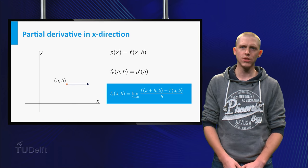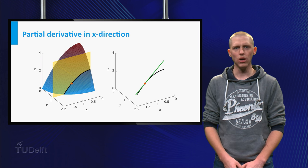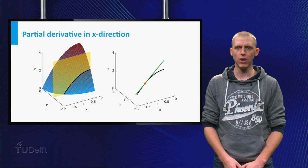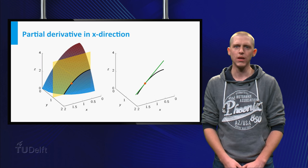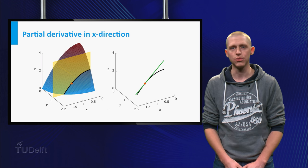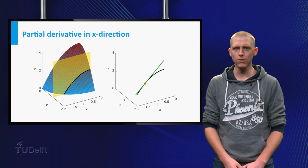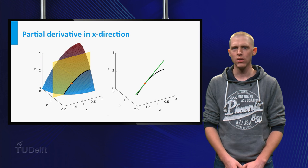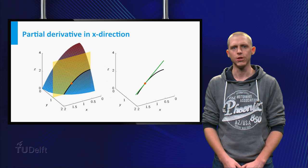What is the geometric interpretation of f_x(a,b)? Well, if c1 denotes the black curve, which is the intersection of the graph of the function and the yellow plane with equation y = b, then f_x(a,b) equals the slope of the tangent line to c1 at the point (a, b, f(a,b)) in three-dimensional space.